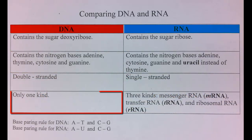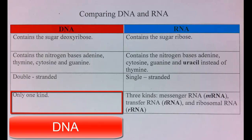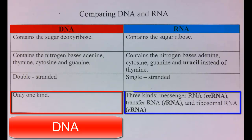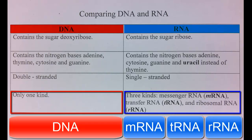There's only one kind of DNA. On the other hand, RNA comes in three different forms: messenger RNA, transfer RNA, and ribosomal RNA.